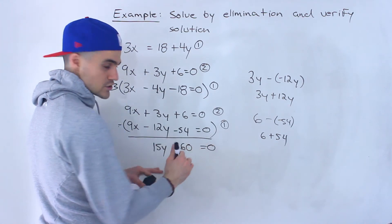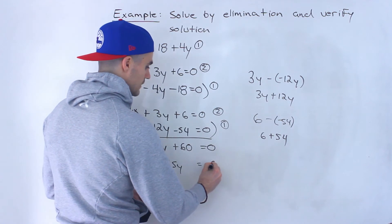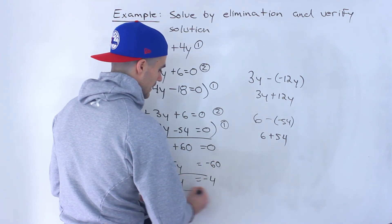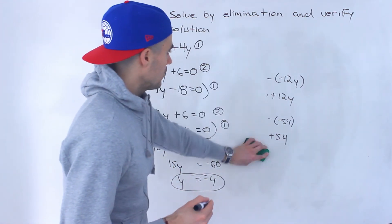Now notice we have an equation in terms of one variable. So 15y equals negative 60. Divide both sides by 15. Y would be negative 4. So that's part of the solution.